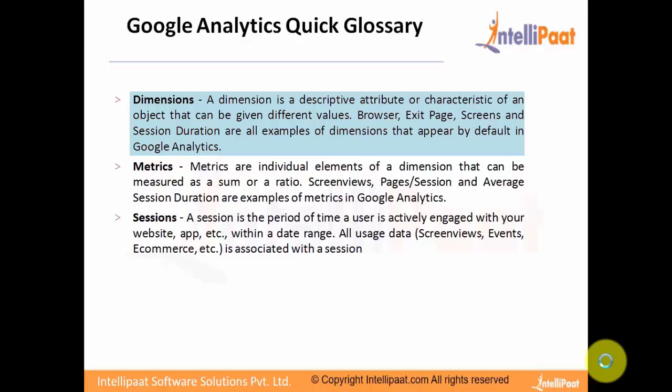Dimensions. A dimension is a descriptive attribute or characteristic of an object that can be given different values. Browser, exit page, screens, and session duration are all examples of dimensions that appear by default in Google Analytics.